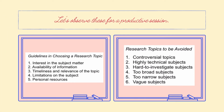Guidelines in choosing a research topic. Number 1: Interest in the subject matter — write or research about a certain topic that you find most interesting. Number 2: Availability of information — there must be a lot of literature written about it. Number 3: Timeliness and relevance of the topic — it must be relevant and timely. Number 4: Limitations on the subject — you must know the scope of your study. Number 5: Personal resources — you must have personal resources to be able to gather the data about your research topic.